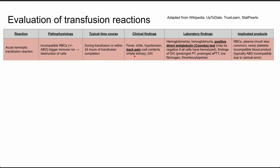Clinical findings include fever, chills, hypotension, back pain, and DIC. Back pain isn't the most common finding, but it's unique to acute hemolytic transfusion reaction. That's what the bold and underline on this chart mean — things that are unique to this type of reaction. The back pain is caused by cell contents that are ruptured open and irritate the kidney.